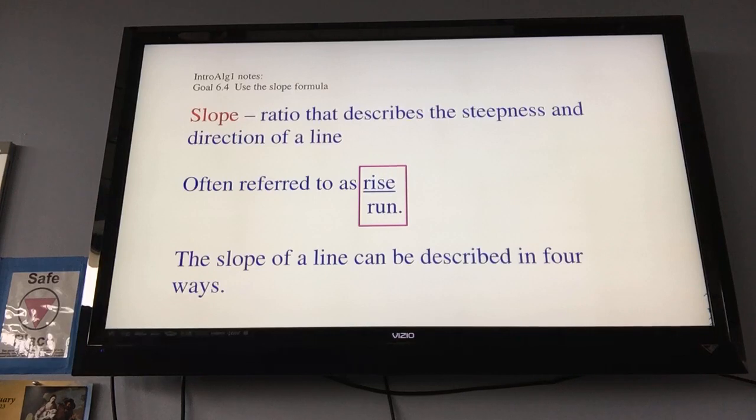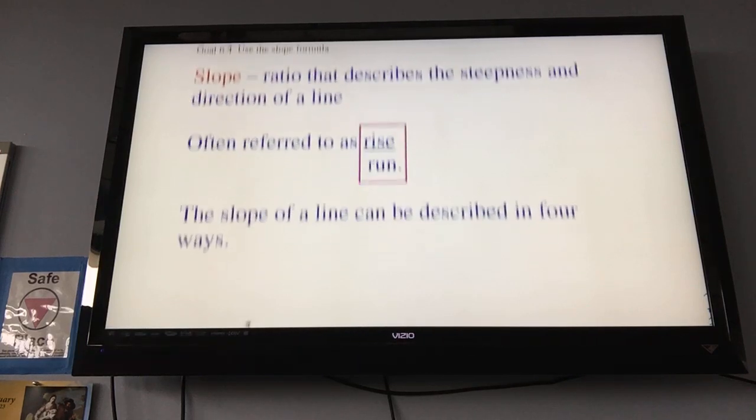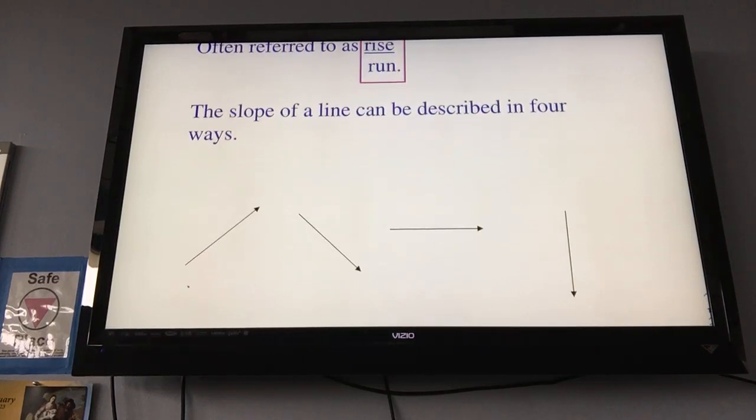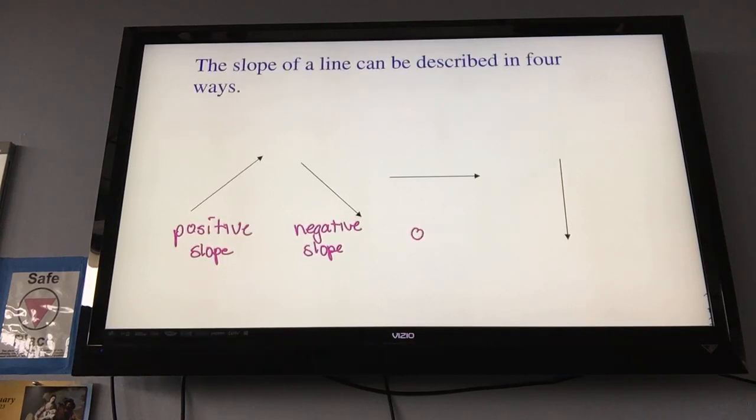The slope can be described in one of four ways. The one on the far left, if you read it from the left to the right, it's going up. That is a positive slope. The second one that is moving down from left to right is a negative slope. If you get a horizontal line, that is a zero slope.